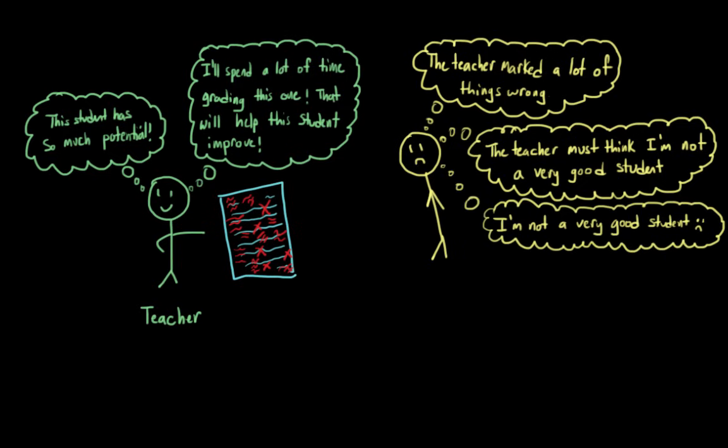Here, the student is acting on an incorrect perception of what they think the teacher believes. Because our attitudes can often influence our behaviors, this might result in the student putting less effort into the class, instead of more effort, like the teacher originally wanted.